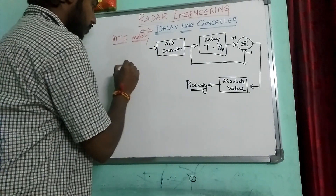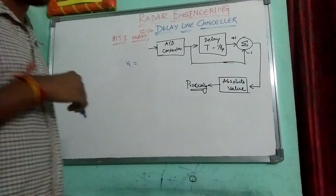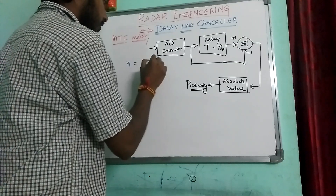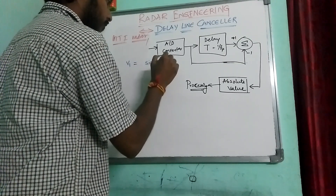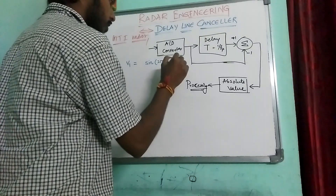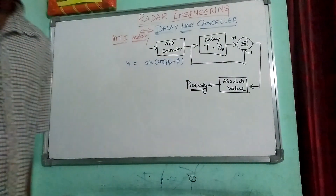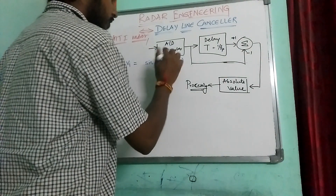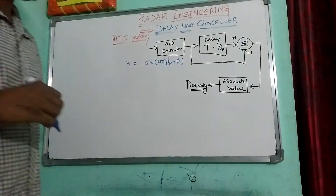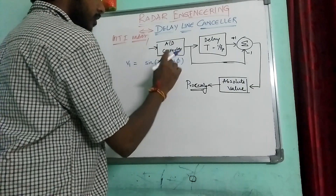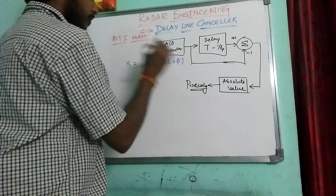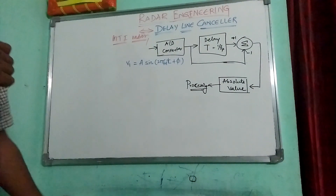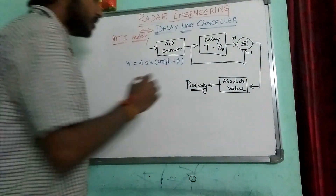Let V1 be the received signal. V1 equals A sine of 2 pi f_d t plus phi, or minus phi — it might be positive phase or negative phase. So V1 equals A sine of 2 pi f_d t, with amplitude A. This is the actual signal.